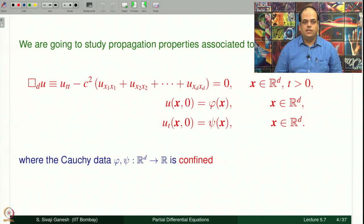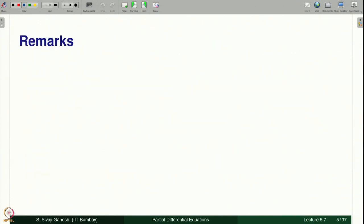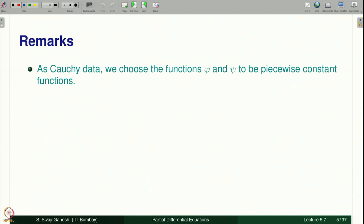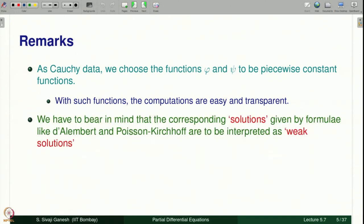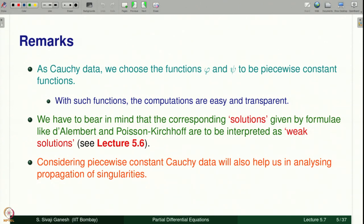Propagation of confined disturbances. We are going to study propagation properties associated to the Cauchy problem where the wave equation is homogeneous and we have Cauchy data phi and psi which is confined — meaning the functions phi and psi are compactly supported. As Cauchy data, we choose phi and psi to be piecewise constant functions, with which the computations are easy and transparent. The corresponding solutions given by formulae like D'Alembert, Poisson, and Kirchhoff are to be interpreted as weak solutions. We introduced the notion of weak solutions in lecture 5.6. Considering piecewise constant Cauchy data will also help us in analyzing propagation of singularities.